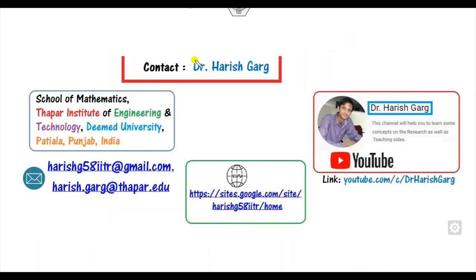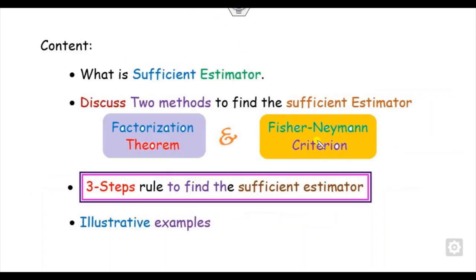I am Dr. Gurr, working in the School of Mathematics, Thaap Institute, India. The content of this video: we will first define what is the sufficient estimator, and the different methods to find it — the factorization theorem and the Fisher-Newman criteria. Most importantly, we will discuss the three-step rule for finding the sufficient estimator, followed by numerical examples.